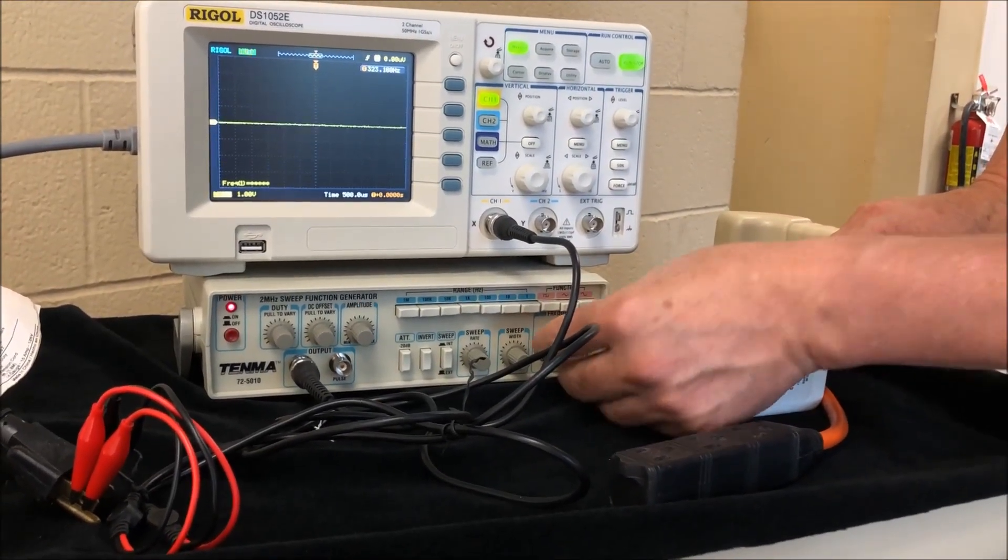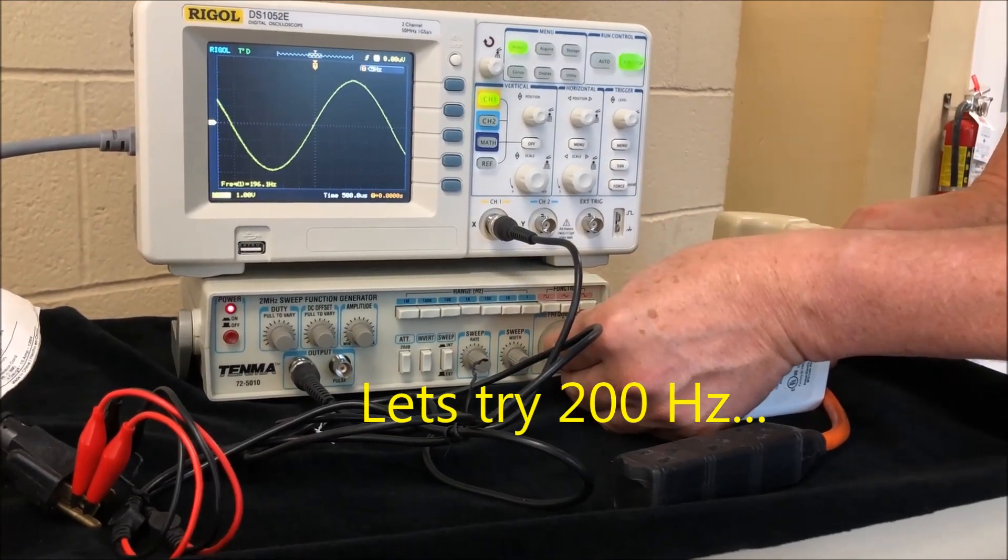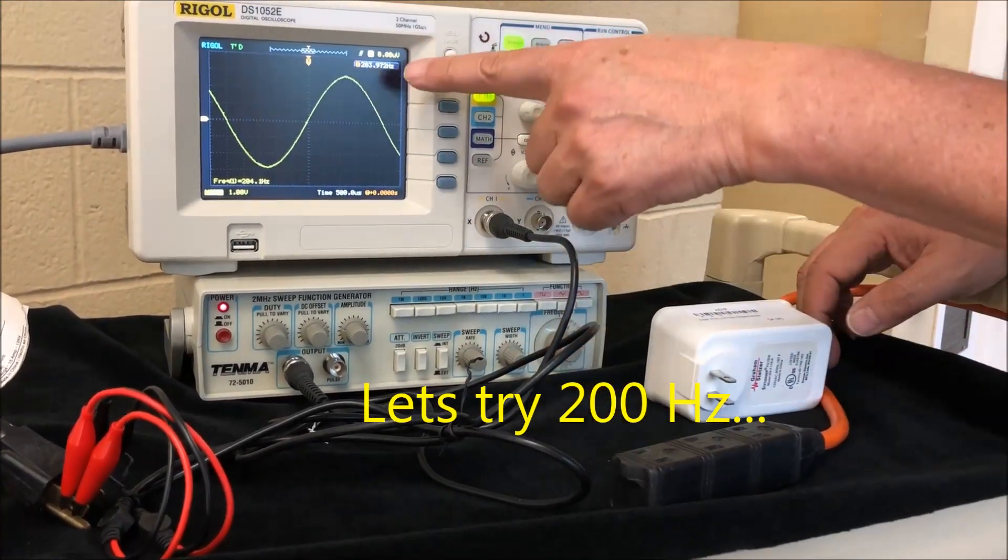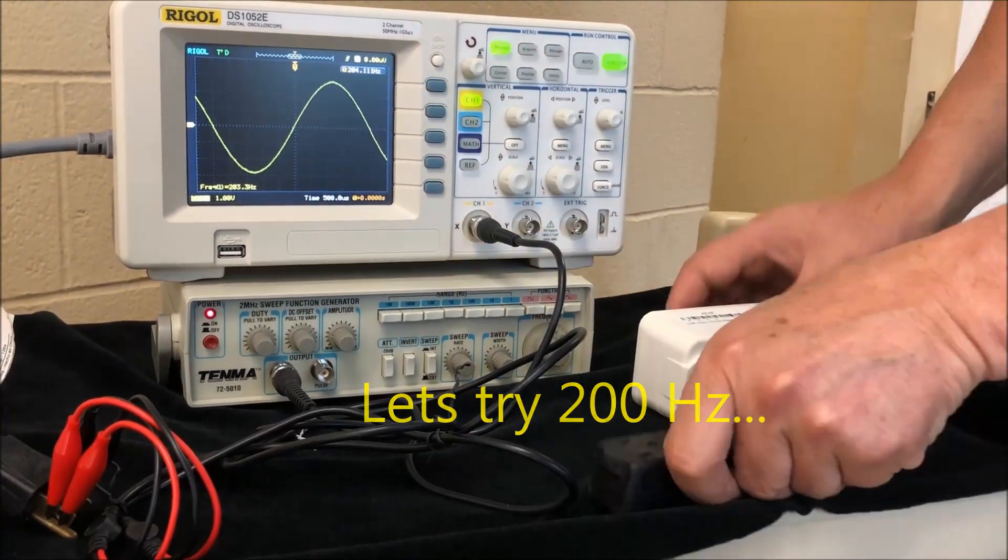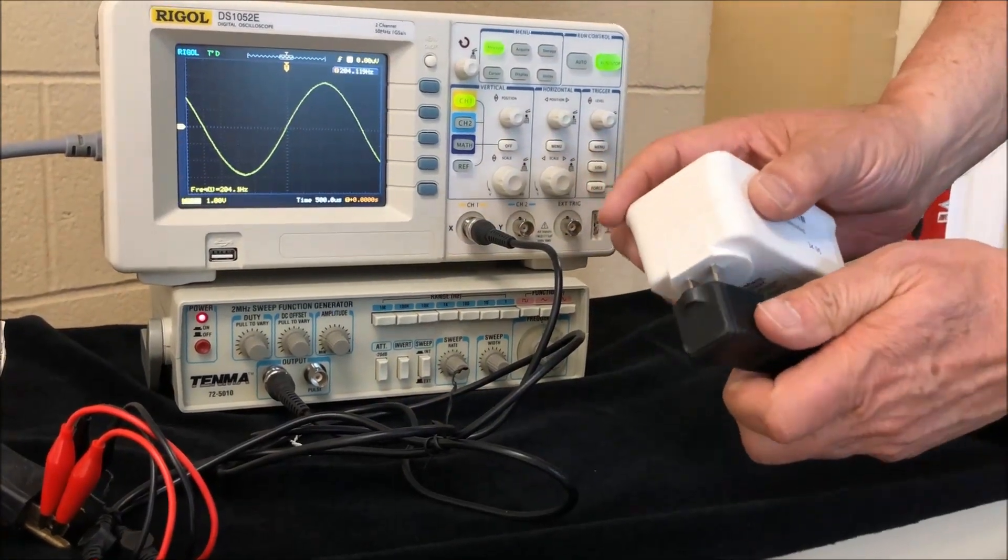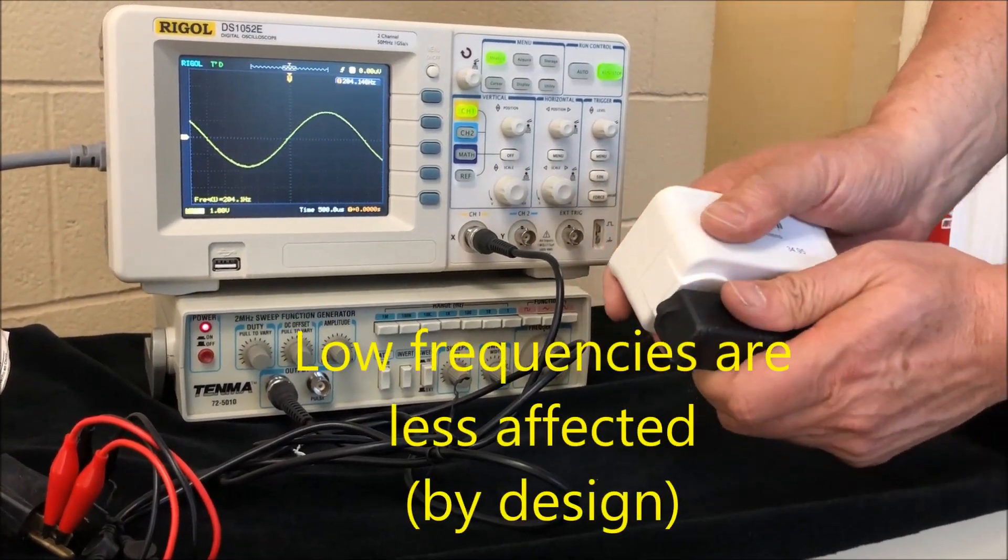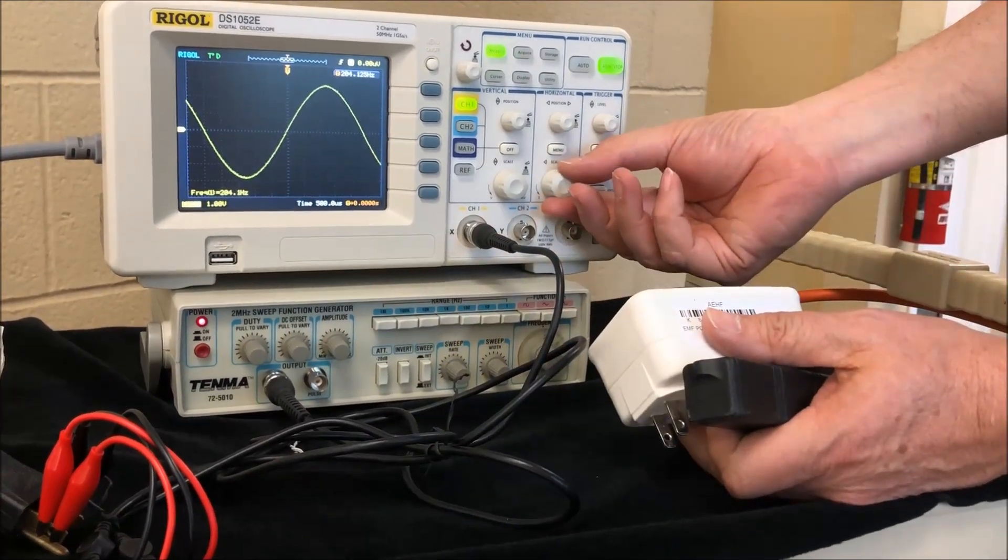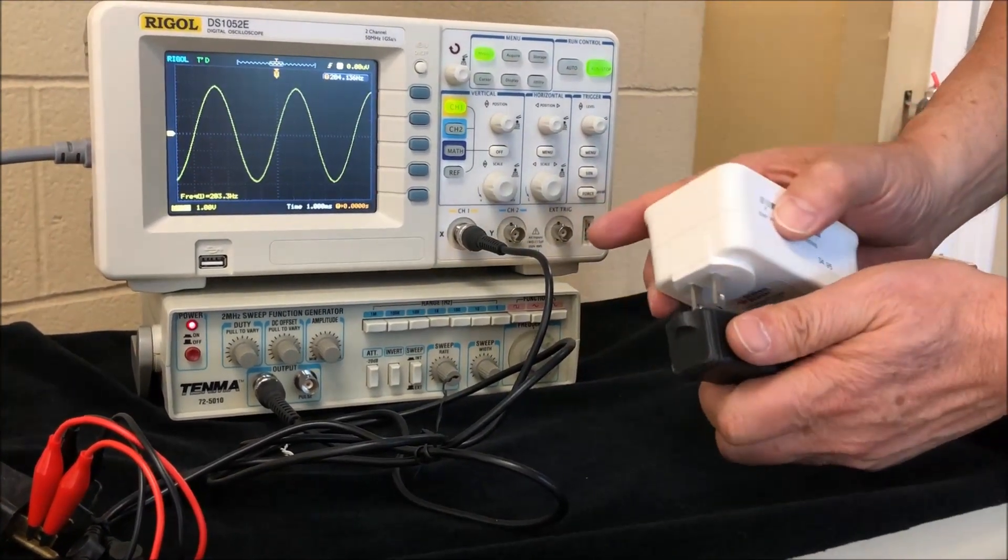Adjust it again. Different frequency. Let's try 200 hertz. There's the waveform. And we plug in the filter. Very modest reduction. So you can see that it's allowing the 200 hertz signal to pass. This is what these filters are designed to do.